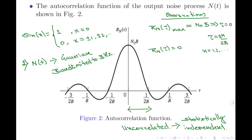So if I take samples of this autocorrelation function separated by 1/(2B) seconds apart, then the joint probability density of these samples will simply equal the product of individual probability densities. Since the output is also Gaussian, each sample will be a random variable with mean equal to 0 and variance equal to N₀B.